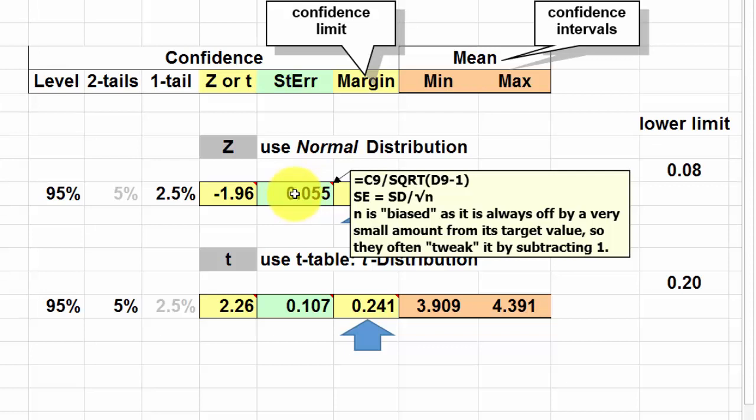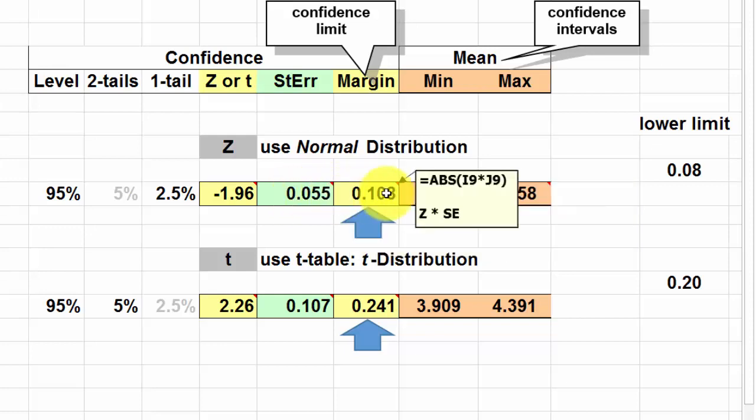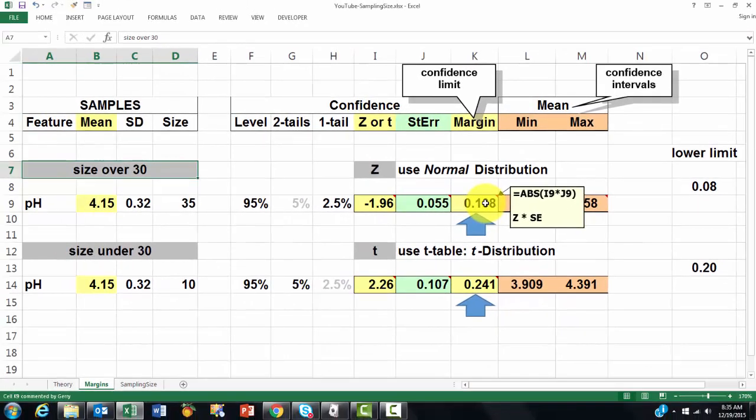So what is the margin? The margin is always the distance in standard error units. So I need the standard error times the Z value. And in this case, it's an absolute function. So what is the minimum mean I can expect the next time with a 95% confidence? That is the mean we actually found minus the margin. And the maximum would be the mean we found plus the margin. This is okay if we have more than 30 cases.